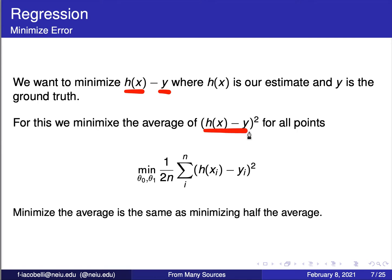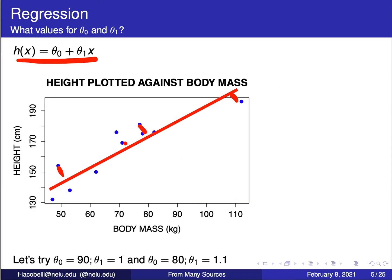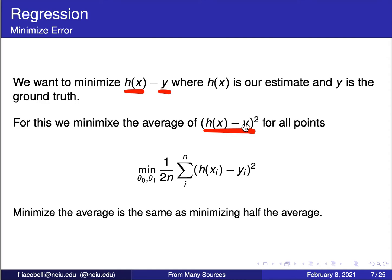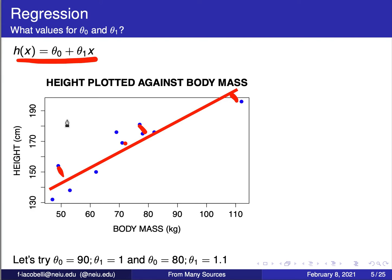We want to minimize the average of the square of whatever we predict at a certain point versus the ground truth at that point. In the previous example, using weight to predict height, this would be the predicted height versus the actual height at a given weight. If I can reduce that distance, I will be reducing the error for all the training data points I have. The best line is the one that minimizes the average squared error, and once I have that line, I can predict new points.